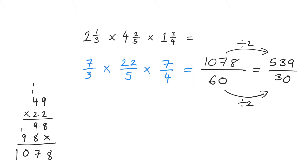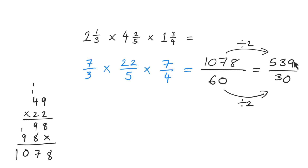Can I simplify this any further? Is 539 divisible by 3? To check divisibility by 3, you add the digits and see if it's a multiple of 3. 5 plus 3 is 8, 8 plus 9 is 17. 17 is not a multiple of 3, so this cannot be divided by 3. There is no other common factor, so this is my final answer.